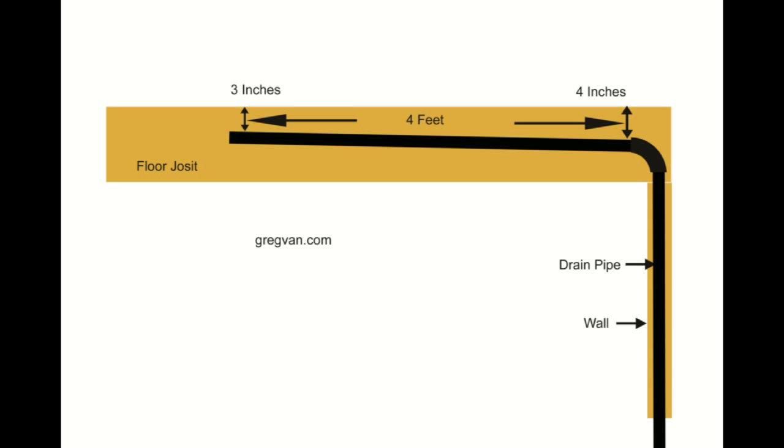If these pipes slope an eighth of an inch per foot, let's face it, they're still going to drain. They just won't meet your local building codes. Building code is a quarter inch per foot. It can always be greater, but it can't be less.